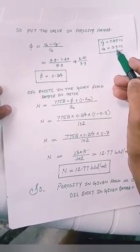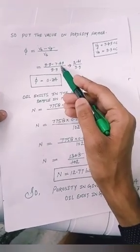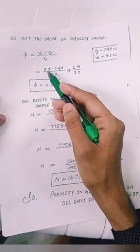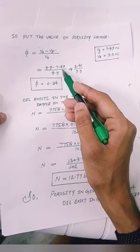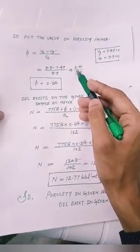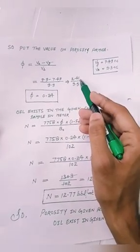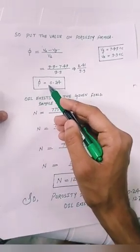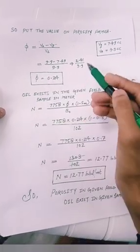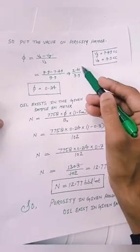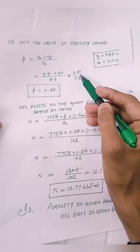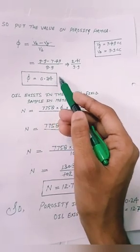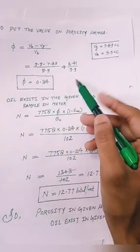VB equals 9.9 minus 7.49, which is the grain volume, upon 9.9. So 9.9 minus 7.49, the value will be 2.41 divided by 9.9. The porosity is equal to 0.24.